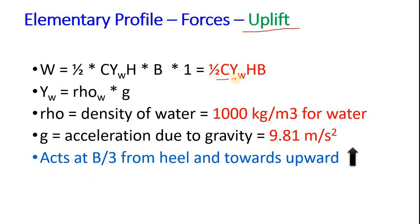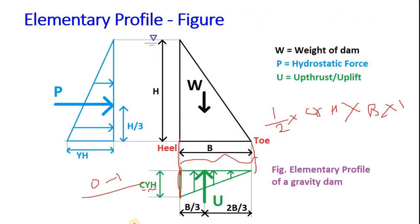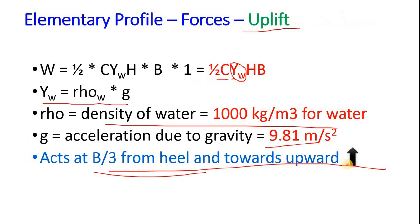1 by 2 c gamma hb. Here also uplift is due to water, so we get the gamma of water. And gamma of water is equal to rho of water into g. Now let's see where this force acts. This is also a triangle and from the base we know it acts at b by 3, that is length is divided by 3, which is b in this case. So it acts from heel towards right side at a distance b by 3. Uplift pressure acts towards upward. Here uplift pressure acts towards upward.